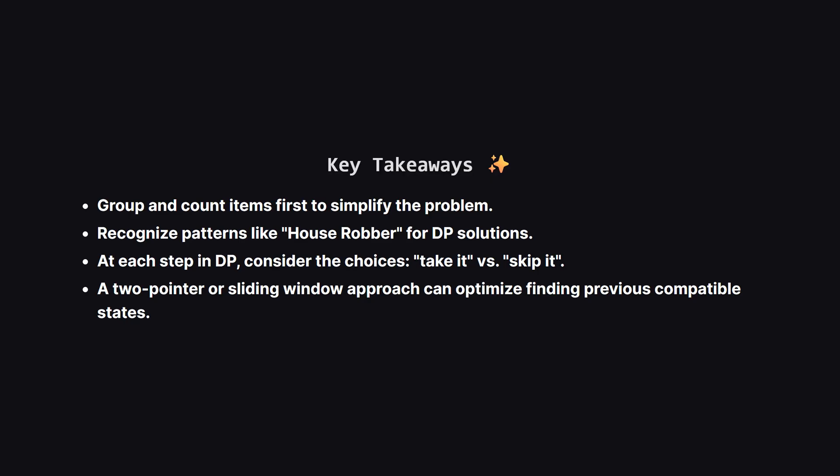So let's wrap up with the key takeaways. When you see problems with lots of repeated numbers, a great first step is often to group them and count them — this simplifies the input dramatically. This problem is a classic example of a choice-based dynamic programming problem, similar to House Robber. The main idea is always breaking it down to a simple decision at each step: do we take the current group of spells or skip them? We also saw how a two-pointer technique helped us efficiently find the best previous result to build upon.